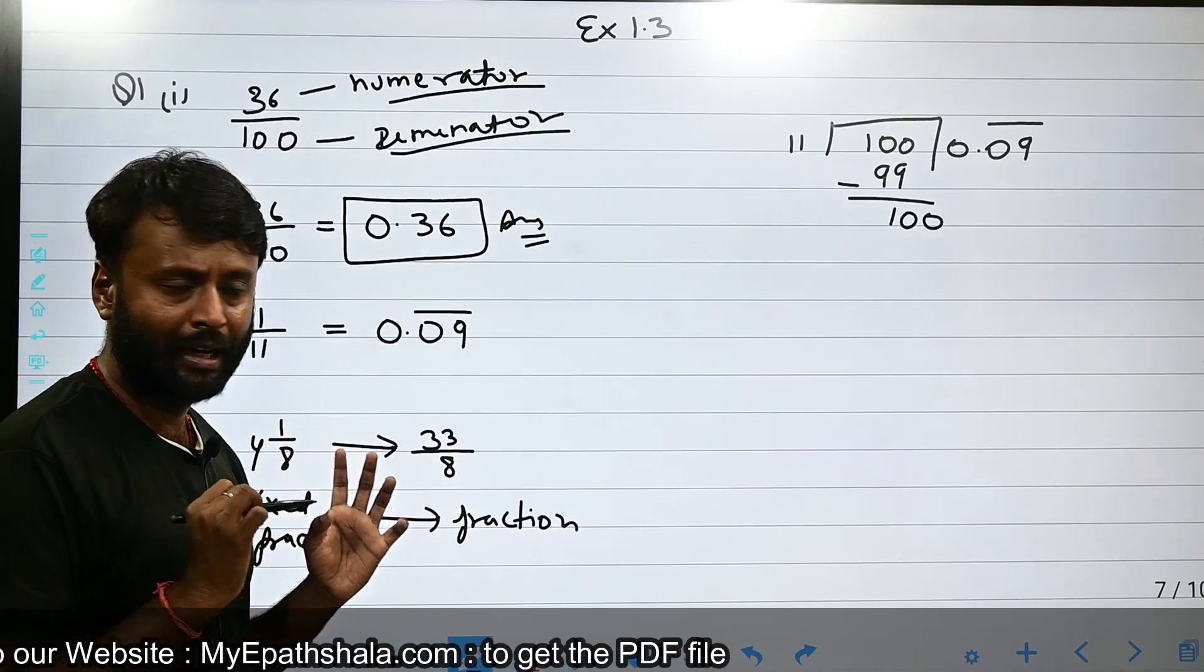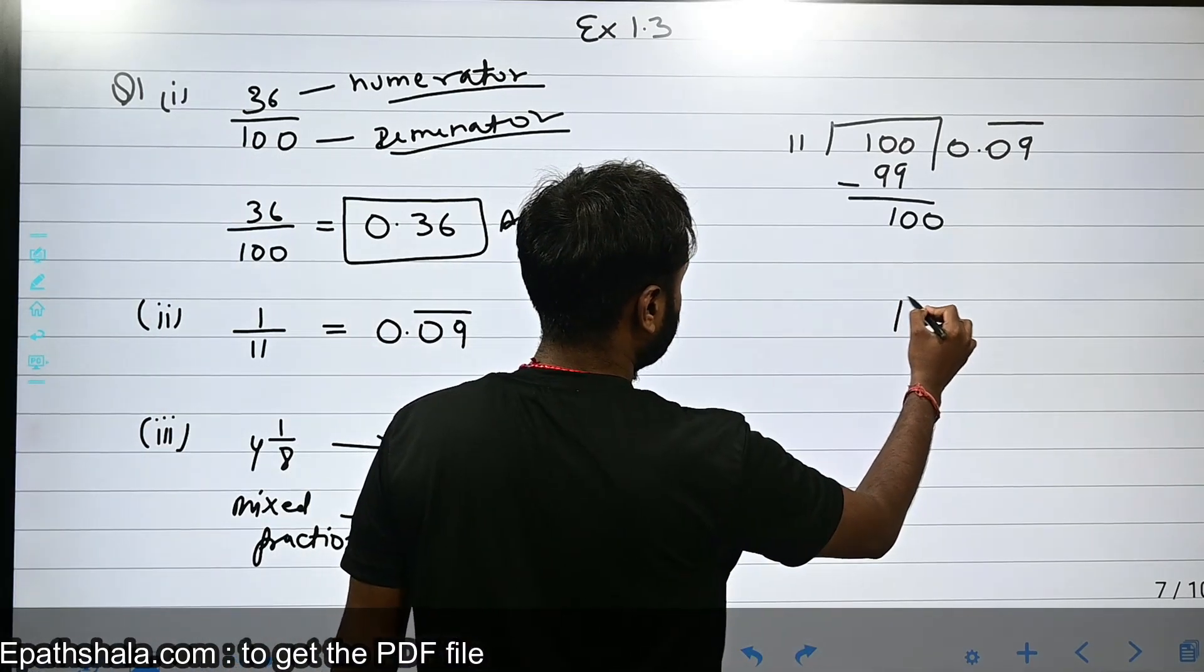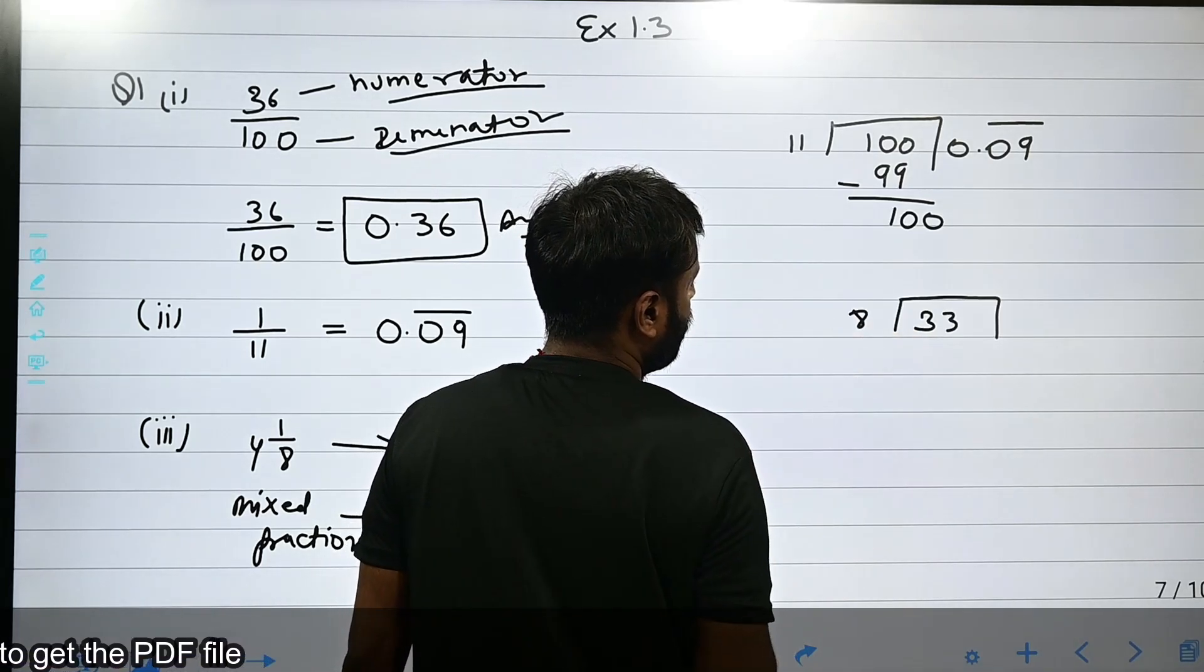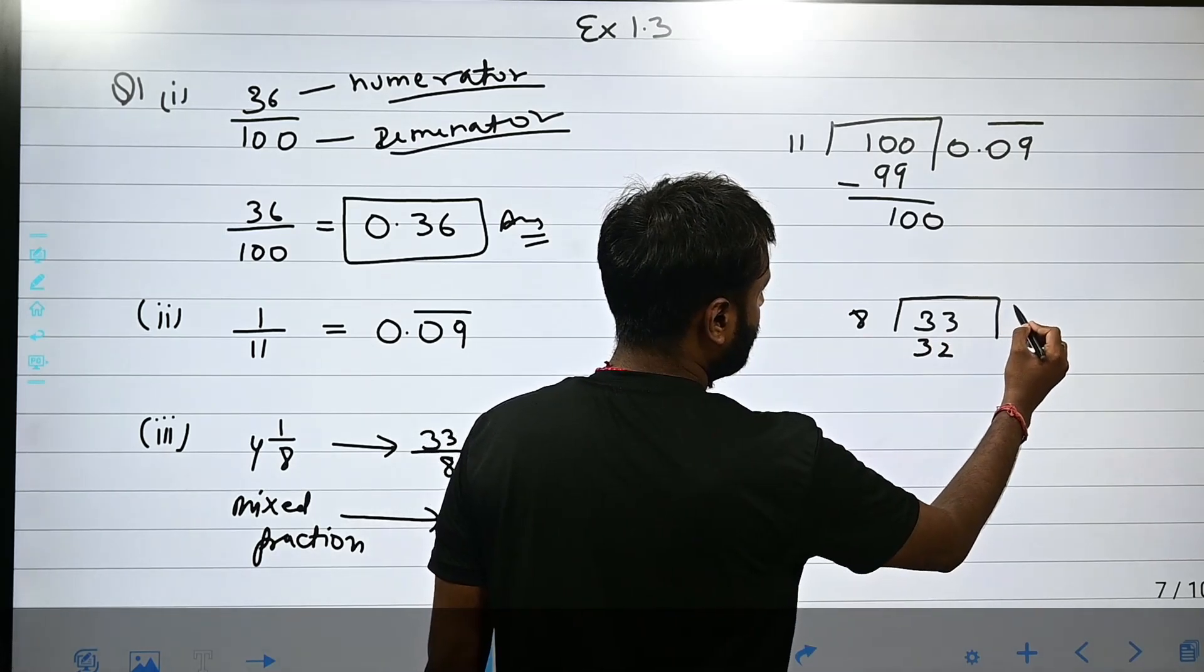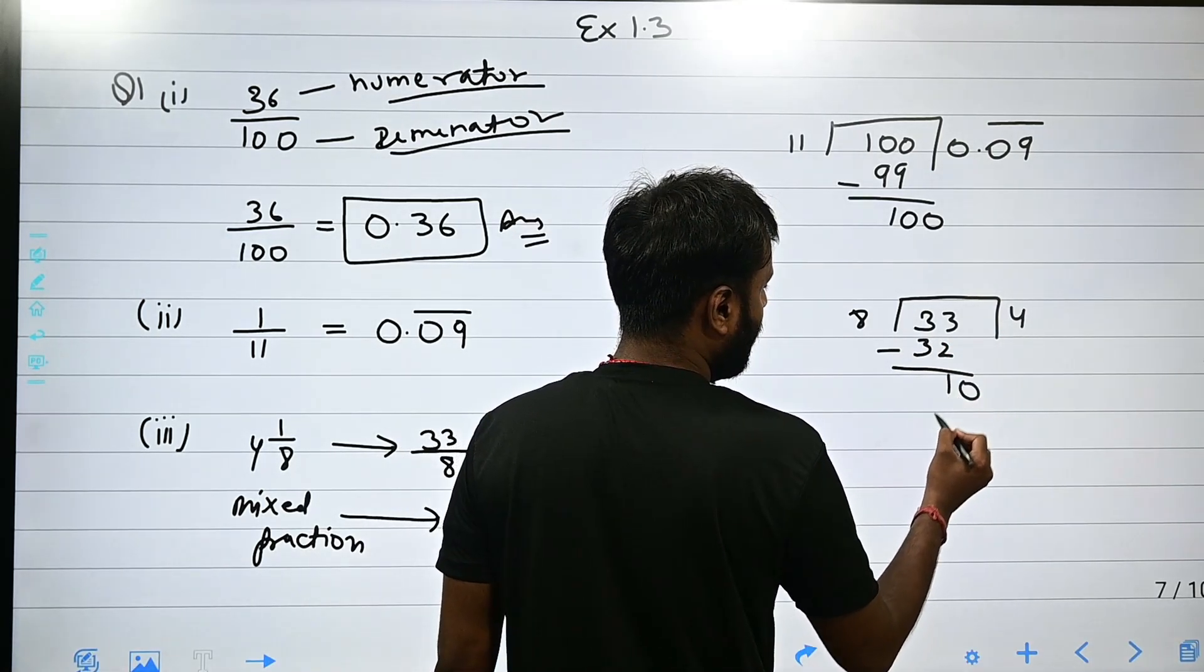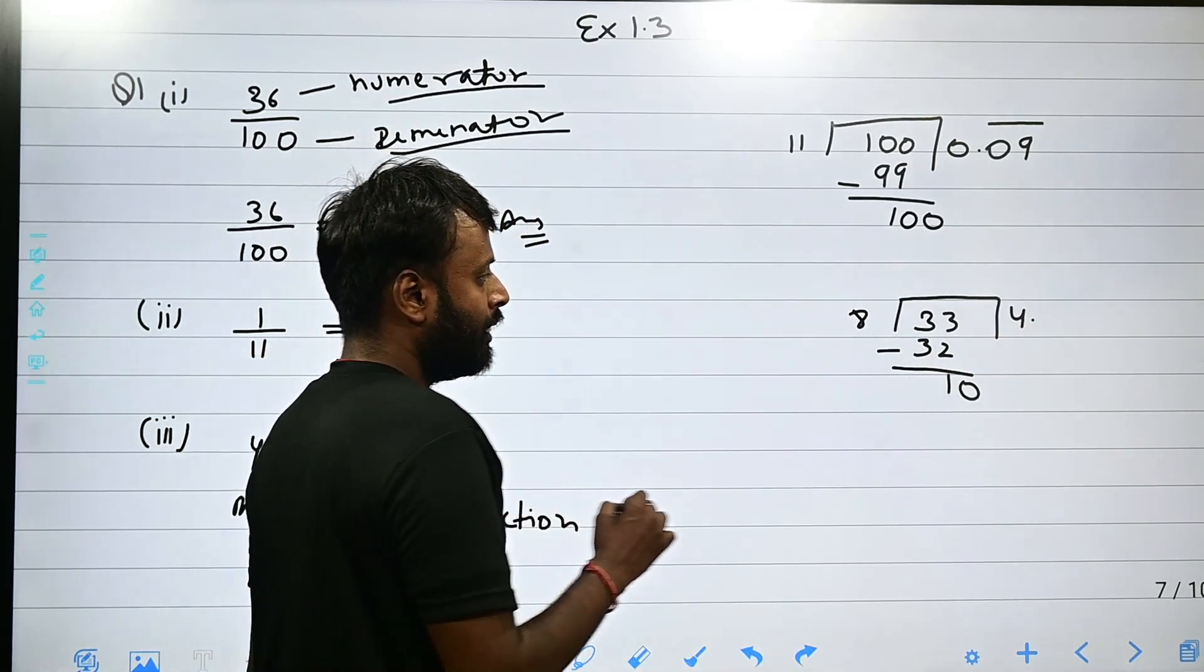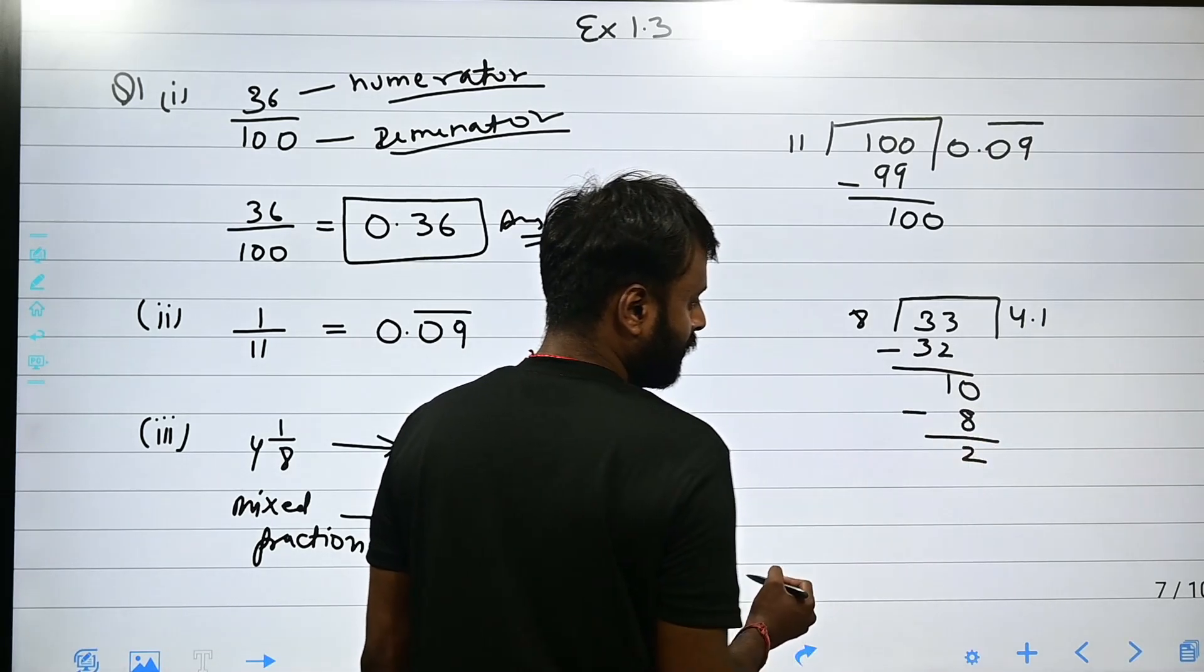Now we will use the division method. 8 into 33: there is 32, which is 4 times 8. We will get 4. We minus, remainder is 1. We add 0 and decimal. 8 into 10 is 1, we write 2, then minus gets 2. Again 0, 8 into 16 is 2, we write 2, then minus gets 4.